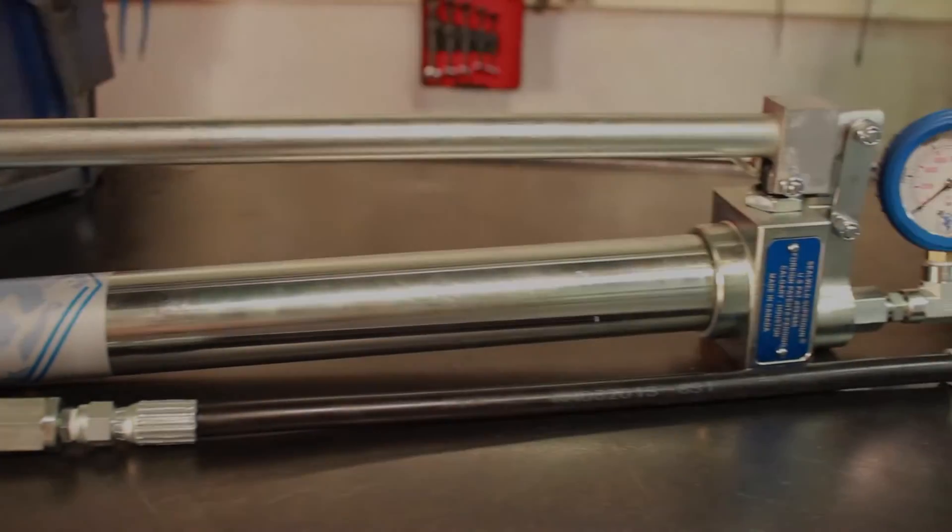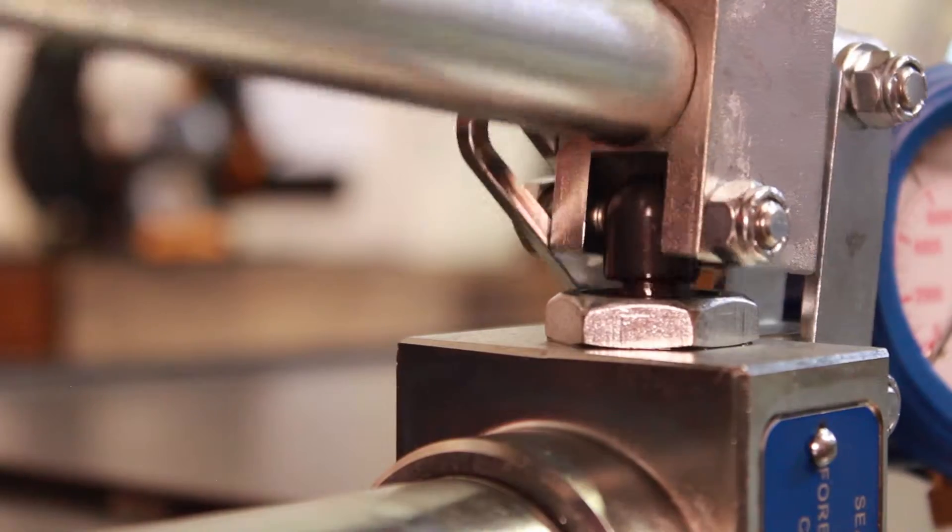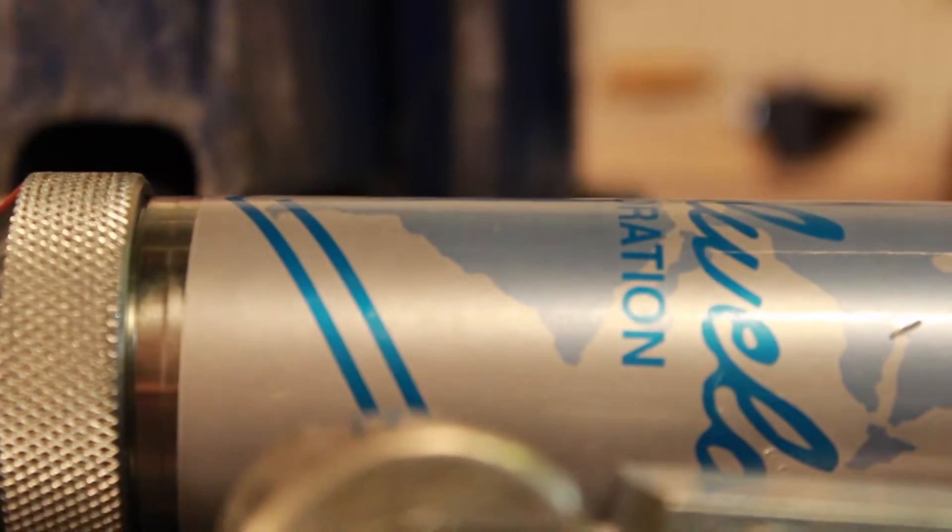The SealWeld Supergun is extremely durable and designed for use on any high-pressure serviceable valve in the pipeline industry. It's easily portable, field repairable, and built to withstand the extreme operating conditions associated with the oil and gas industry.